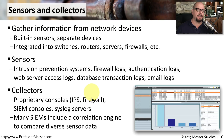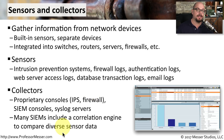An interesting aspect of many SIEMs is they're able not only to collect all of this data and store it into a central database, but they can also begin correlating this information together. They may be able to find information on a switch, on a router, and on a firewall, and piece all of these together to indicate that an attack may be occurring on your network.